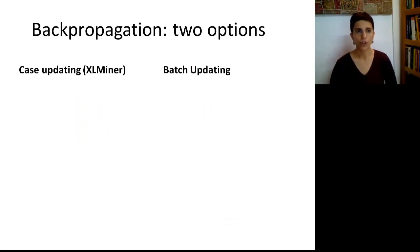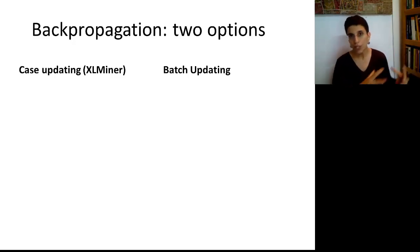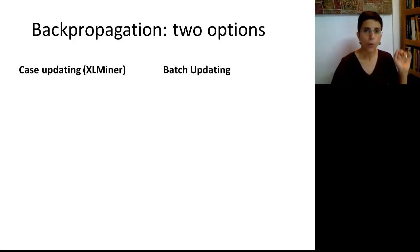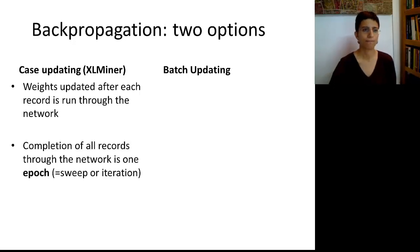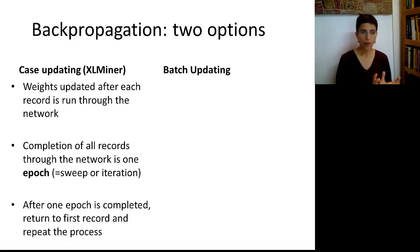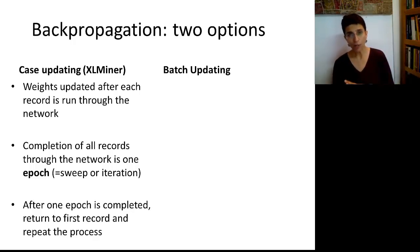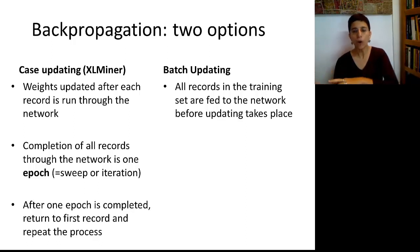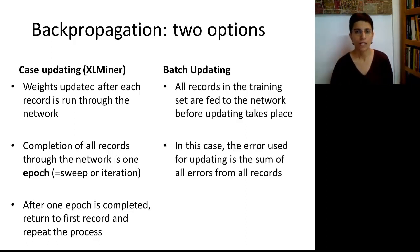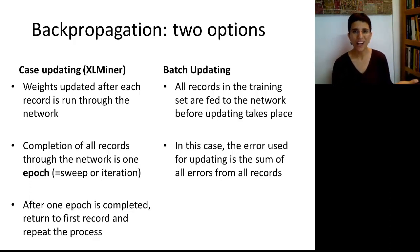There are two big options for how you run a neural net: case updating and batch updating. This refers to how you use the training data. In case updating, we feed one record at a time and update the weights every time a single record is introduced. Once we complete a whole set of records, we call this an epoch, a sweep, or an iteration. After one epoch we return to the first record and feed it in again — that's the approach XLMiner currently takes. In batch updating, you feed the entire set of training records before updating the errors. There's no approach that is always better than the other.